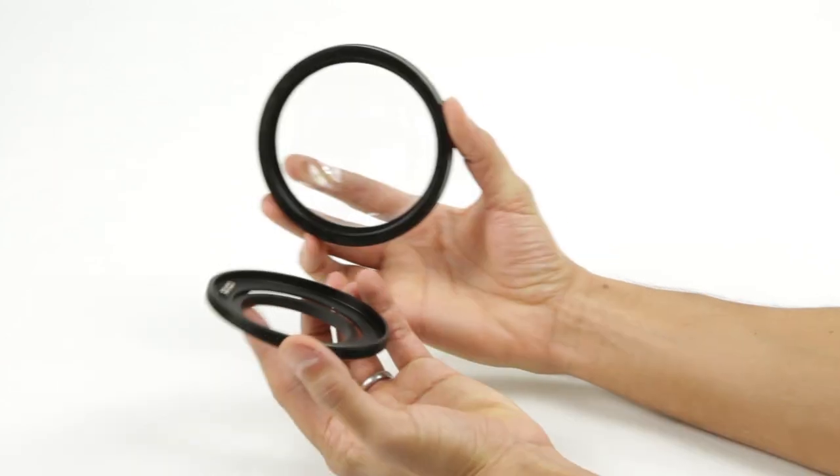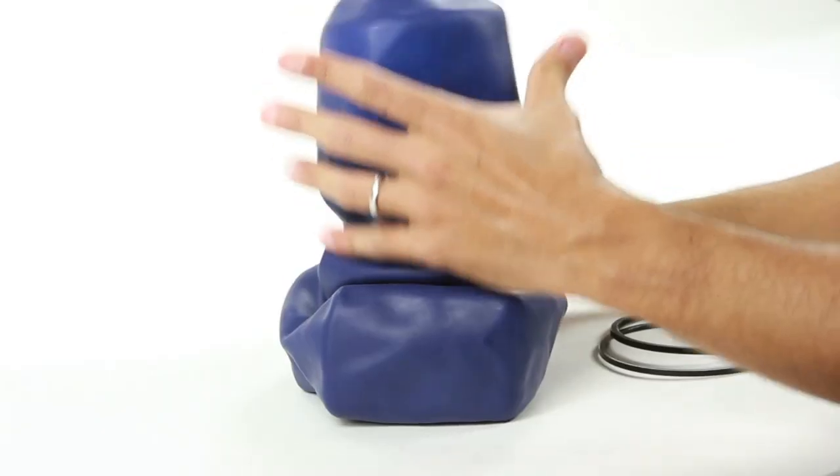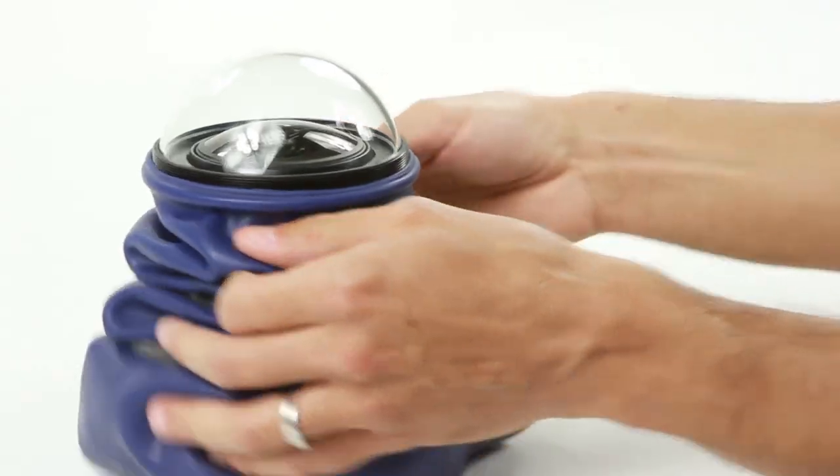Now thread the dome lens onto the adapter's outer thread. Unroll the OutX cover onto the dome lens lip. Line up the cover's lip around the dome lens just like all the other seals OutX uses.